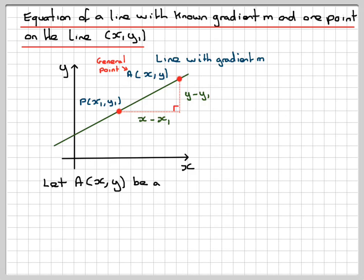So let A(x, y) be the general point on the line with known gradient m and known point x1, y1.